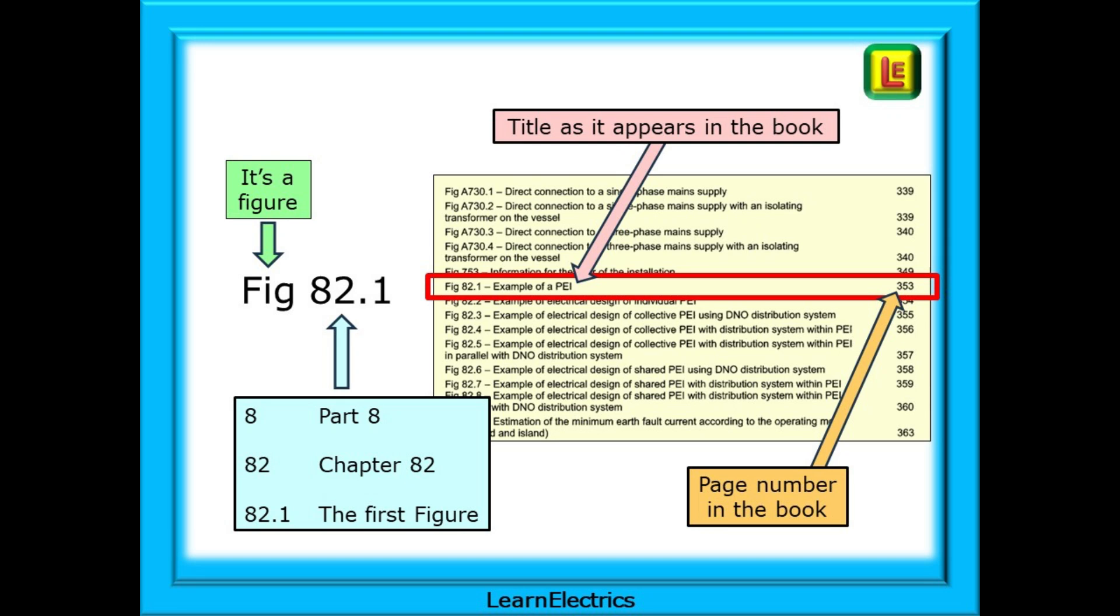Then we have the title of that figure as it appears in the book. Examples of PEI, in this case. Finally, we have the page number where it can be found in the brown book.